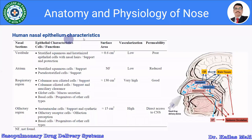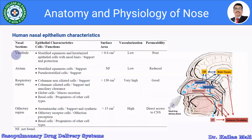The human nasal epithelium characteristics are described for each nasal section: vestibule, atrium, respiratory region, and olfactory region — covering epithelial characteristics, cells, functions, surface area, vascularization, and permeability. In the vestibule, the stratified squamous and keratinized epithelial cells with nasal hair function in support and protection. The surface area is approximately 0.6 centimeter square, vascularization is very low, and drug permeability is very poor.